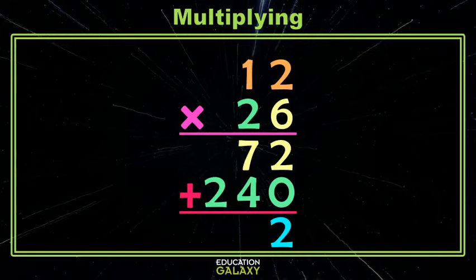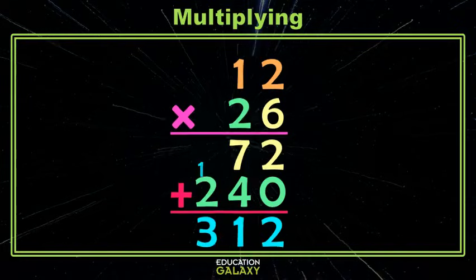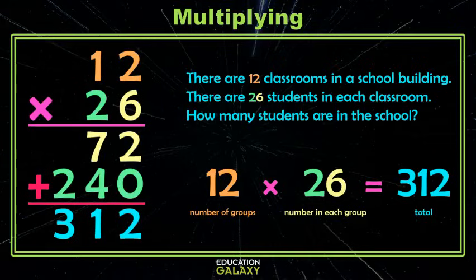So 2 plus 0 is 2, 7 plus 4 is 11, which doesn't all fit, so we leave 1 and carry 1. And 1 plus 2 is 3. Now, how did this all start? Oh right, we were looking for the number of students, which we did.